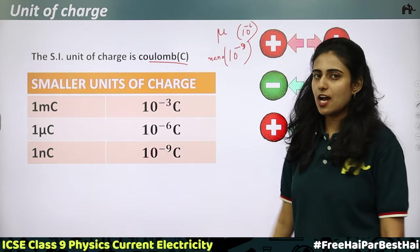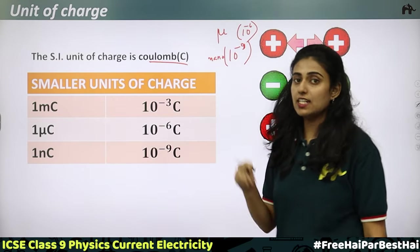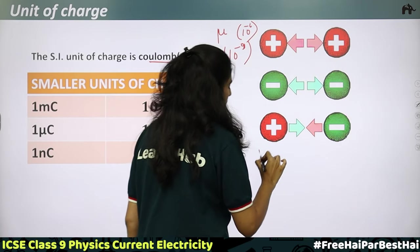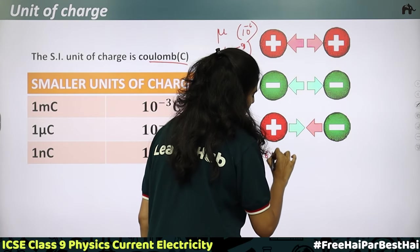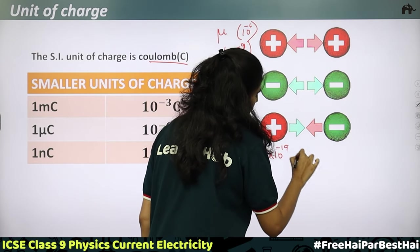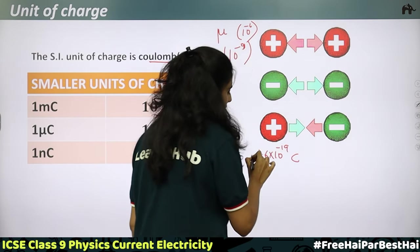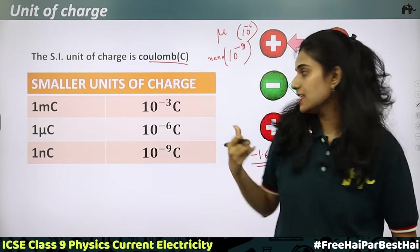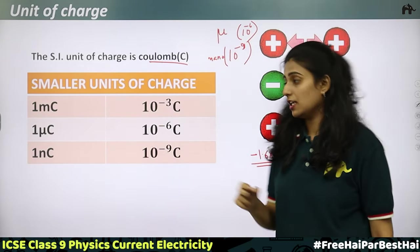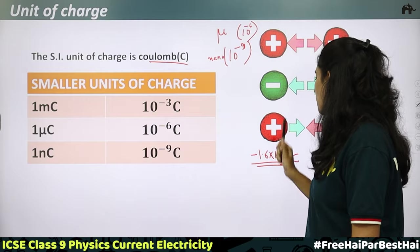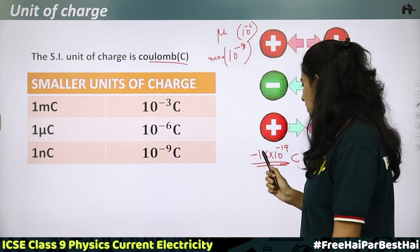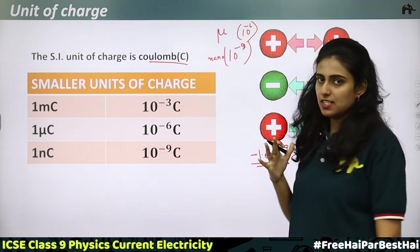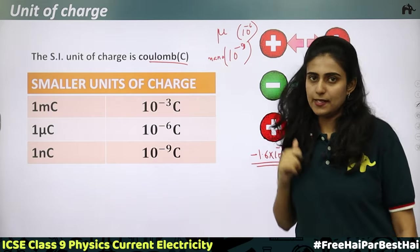The charge of an electron is 1.6 × 10⁻¹⁹ coulombs — it is negatively charged. Protons have the same magnitude of charge but positive: +1.6 × 10⁻¹⁹ coulombs. Neutrons are neutral particles, so their charge is zero.